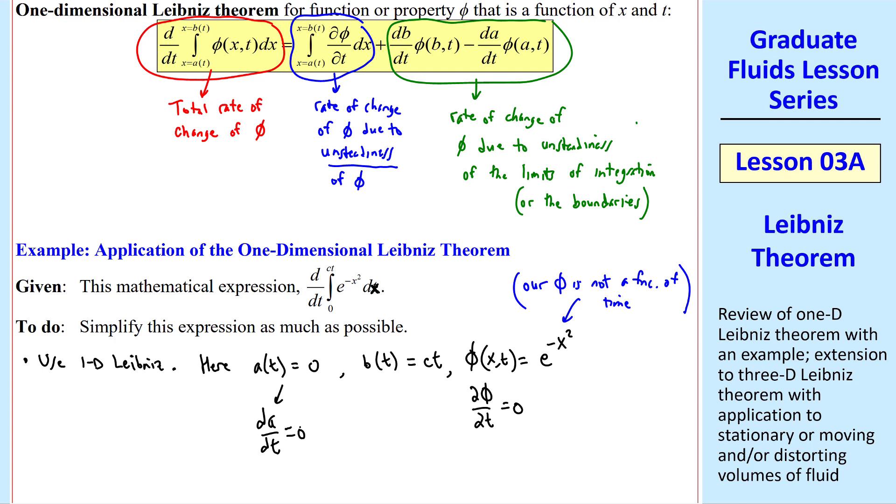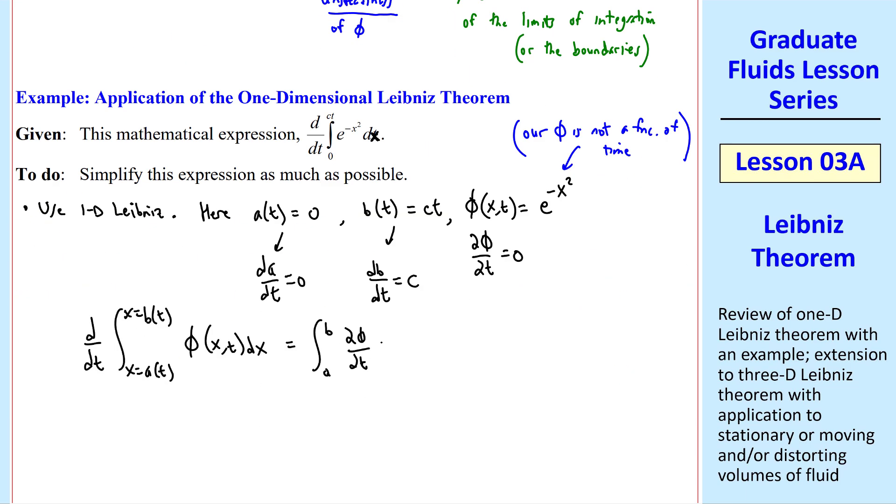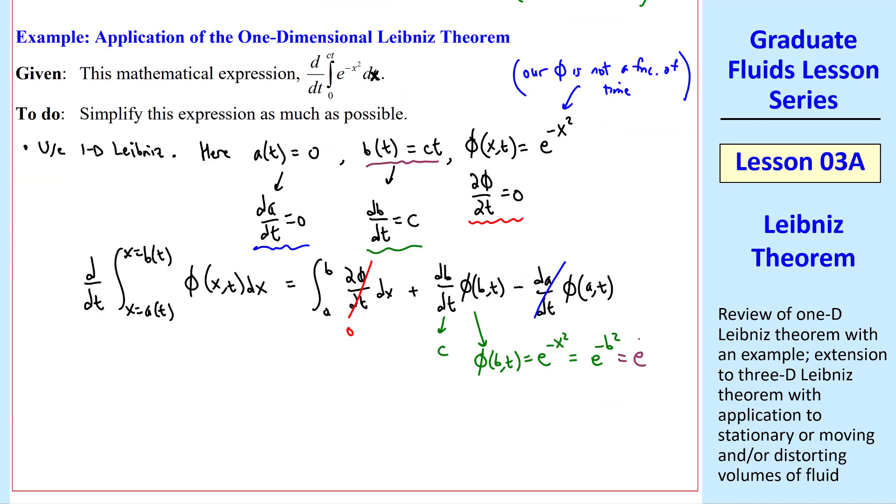We'll also calculate db/dt and da/dt so that we can plug into this equation. Well if a is zero, da/dt is also zero. And since b is ct, db/dt equals c. Now let's plug in the Leibniz equation. I rewrote the Leibniz equation here. We know that del phi del t is zero. We know that da/dt is zero. And we know that db/dt is c. Phi at x equal b and some time is e to the minus x squared, where x is now b, or e to the minus b squared. But here b is ct. So this is e to the minus c squared t squared. Putting all this together, the only term left is this term, or this term here. So we have c times this exponential term. So this is our final answer.